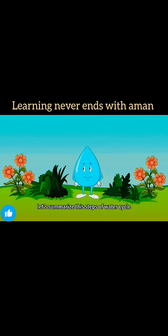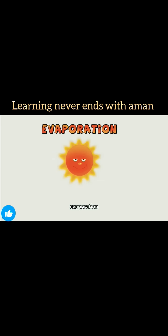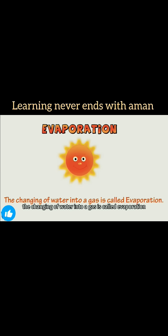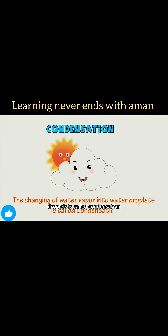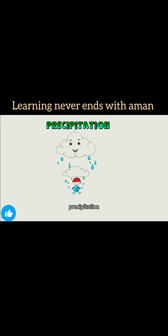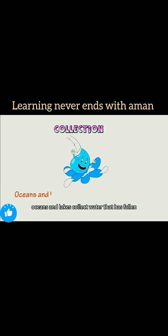Let's summarize the steps of the water cycle. Evaporation: the changing of water into a gas is called evaporation. Condensation: the changing of water vapor into water droplets is called condensation. Precipitation: water falling from the sky in the form of rain, snow, or hail is called precipitation. Collection: oceans and lakes collect the water that has fallen, then water evaporates into the sky again and the cycle continues.